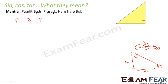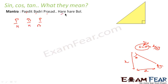Pandit, Badri, Prashad in the numerator — that is P, B, P — and Hari, Hari, Bowl in the denominator — that is H, H, B. So Pandit, Badri, Prashad, Hari, Hari, Bowl — this is the mantra.